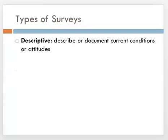There are two major types of surveys: descriptive and analytical. A descriptive survey attempts to describe or document current conditions, attitudes, or behaviors — that is, it simply explains what exists at the moment.